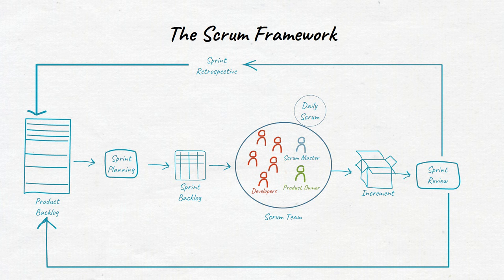Scrum's artifacts represent work or value. They're designed to maximize transparency of key information. Each artifact contains a commitment to ensure it provides information that enhances transparency and focus against which progress can be measured.